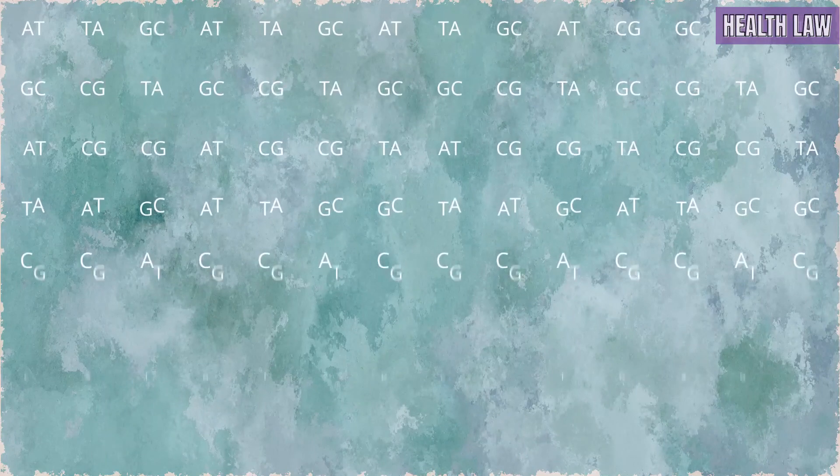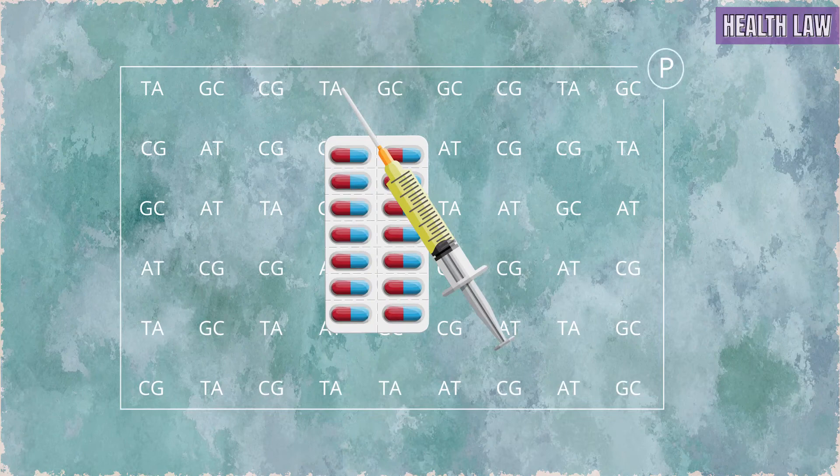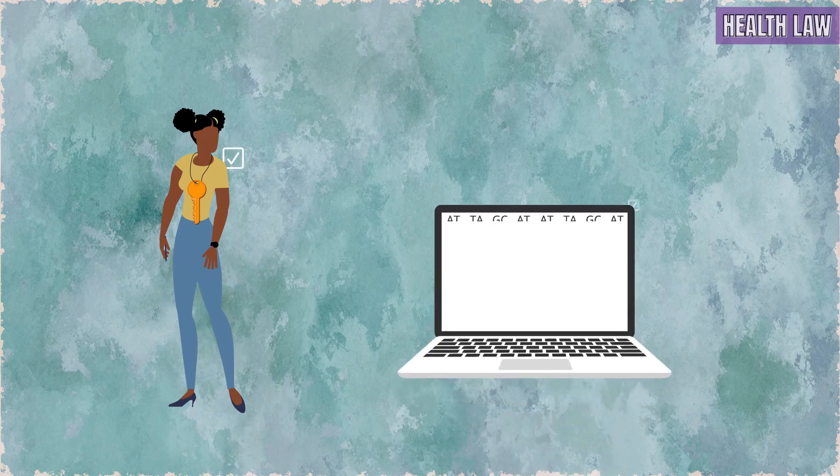If a gene sequence has a demonstrated functional use, it can be patented. In principle, the person who applies for such a patent does not need to have any rights in the gene sequence. However, similar to the copyright holder in a genomic data set, the patent holder will not be able to use or commercialize the patented gene sequence without consent from both the data subject and from the owner of the gene sequence.